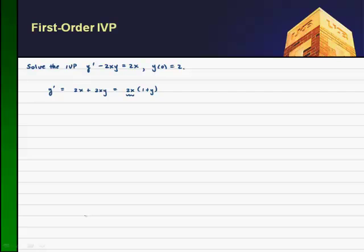So it should be clear here that I have some function in x times some other function in y, if you will. So I'll write y prime as dy/dx equals 2x times (1 plus y).